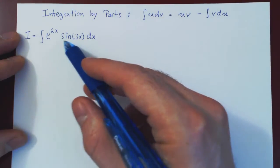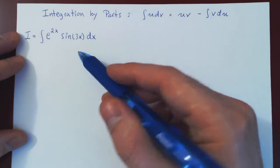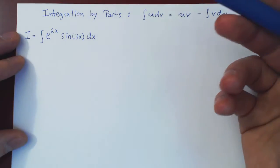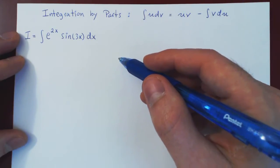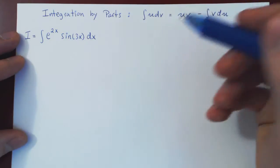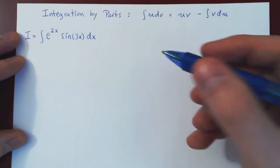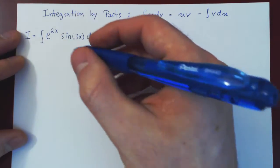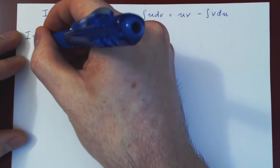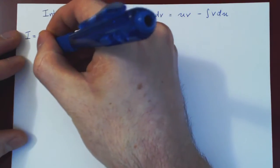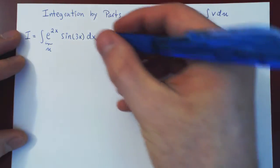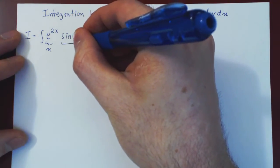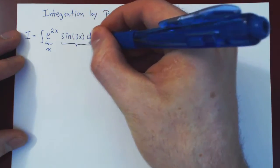So it looks like integration by parts is not going to work here. But let's still do it and see what comes out. Let u be e to the 2x. Then everything else must be dv, so sine of 3x dx is dv.